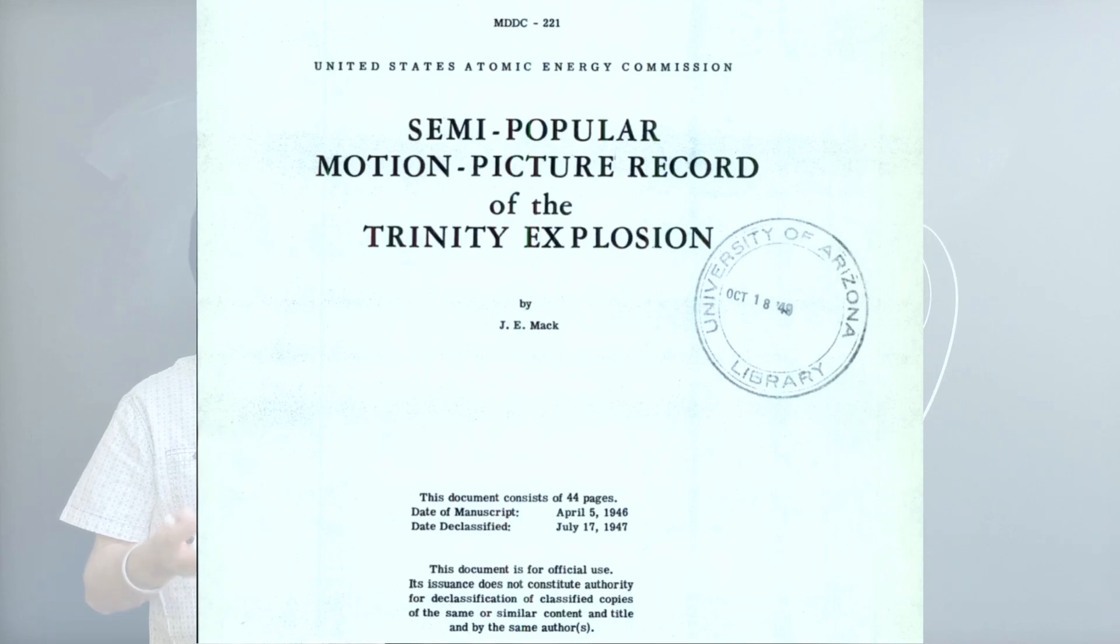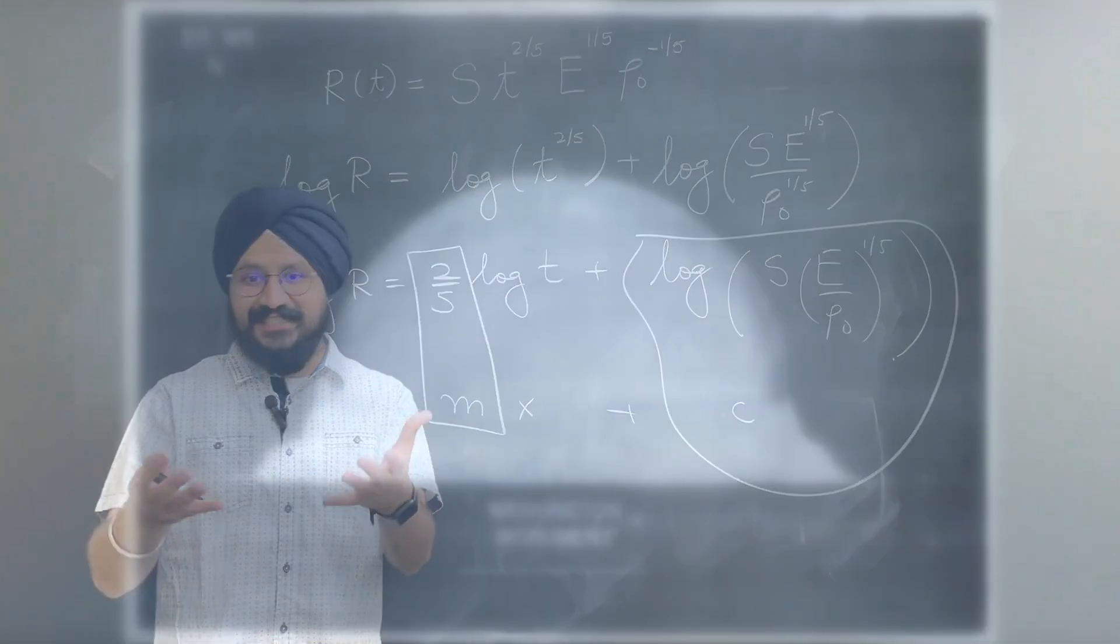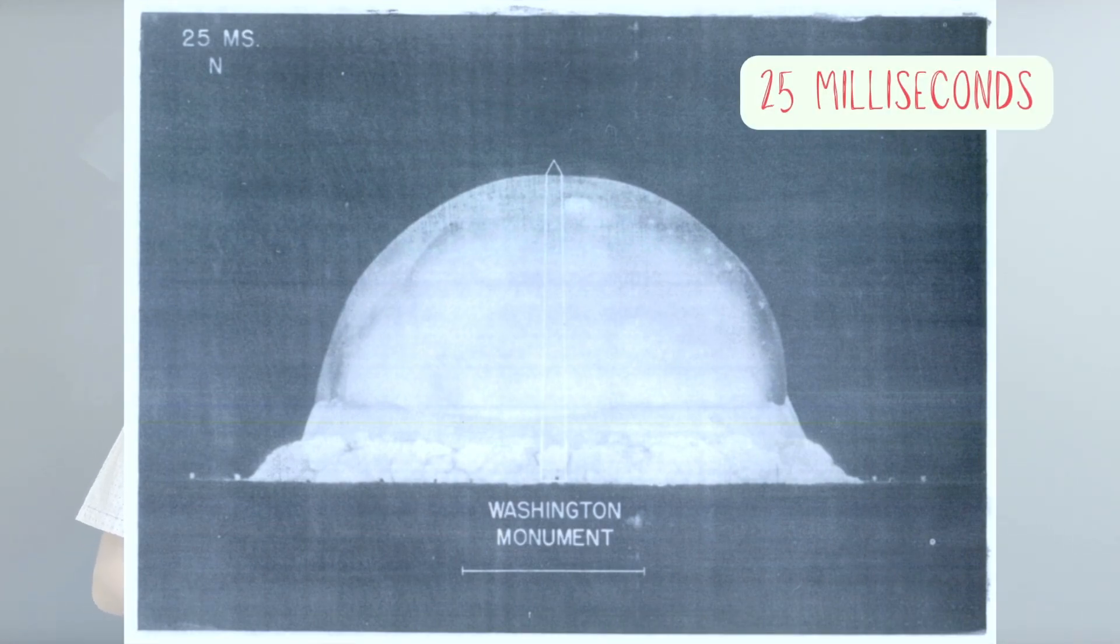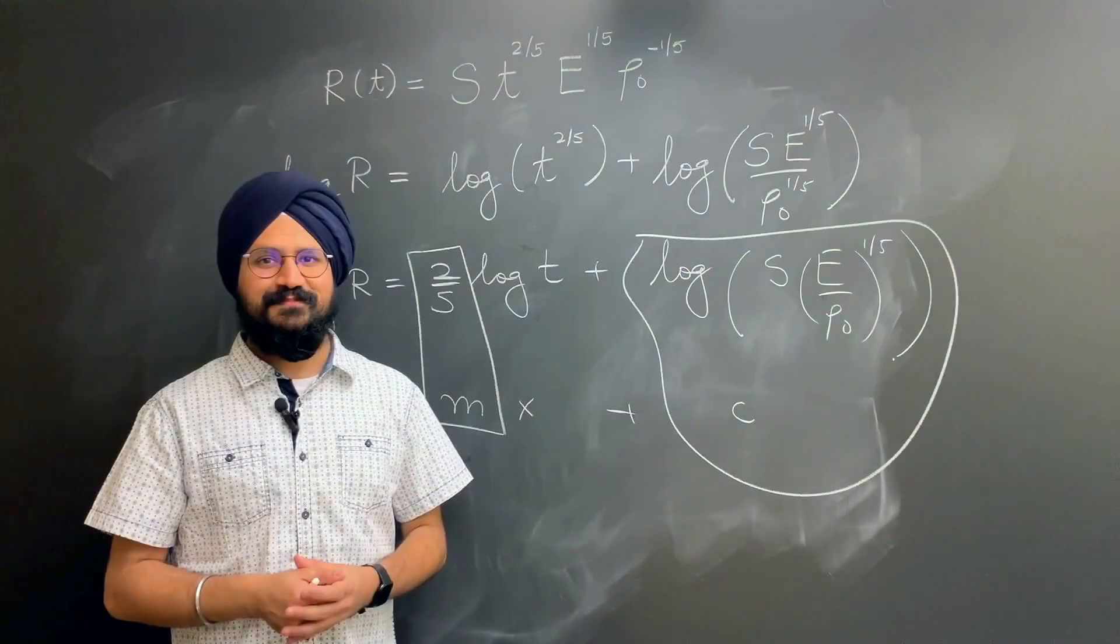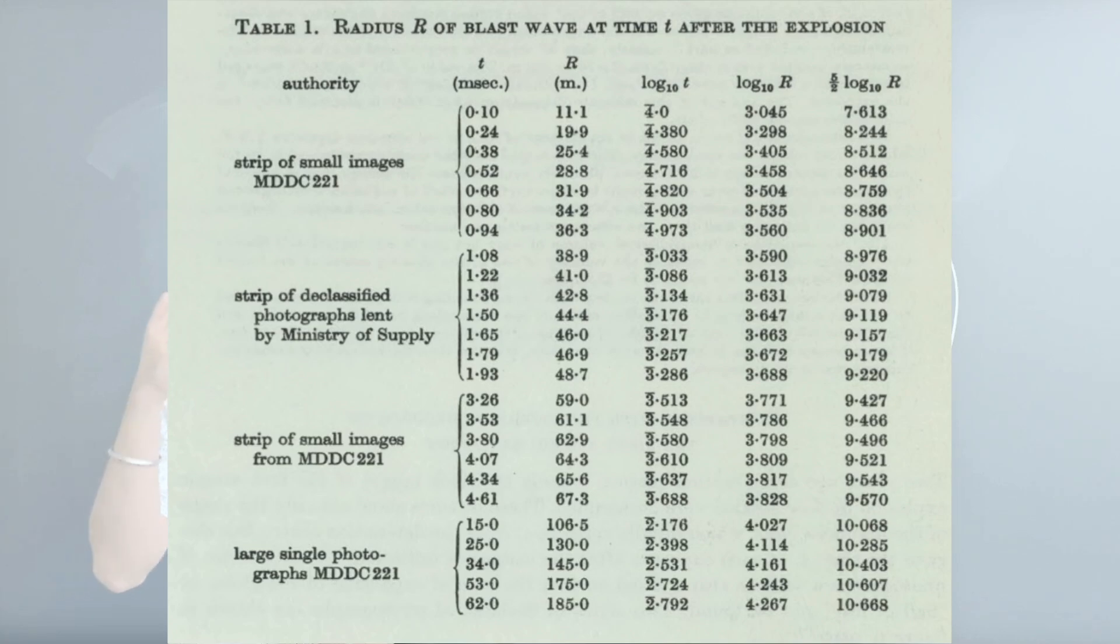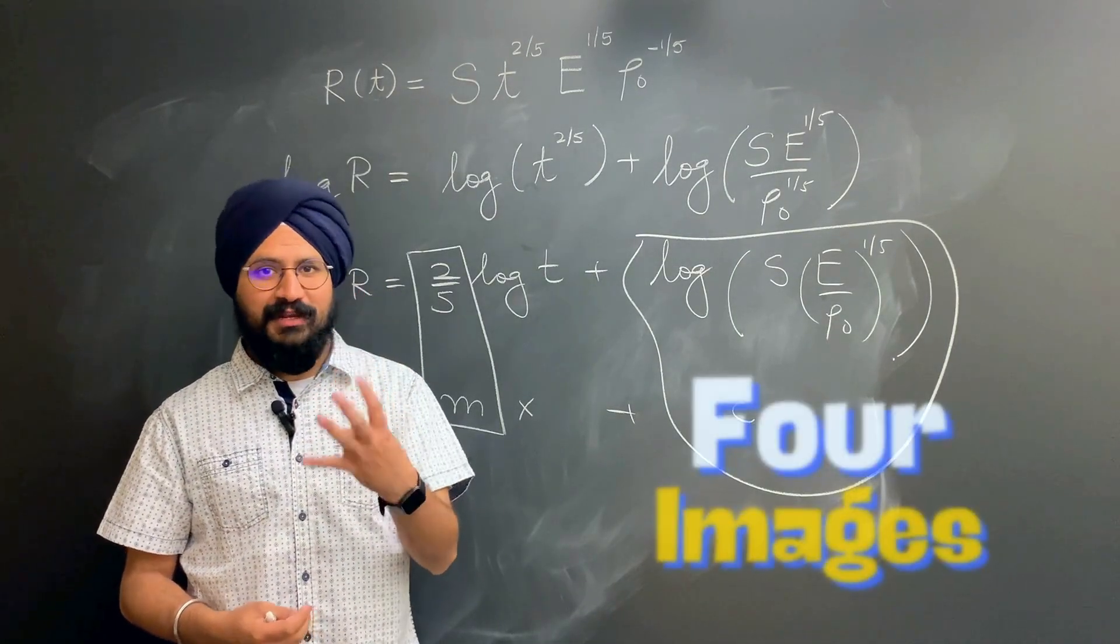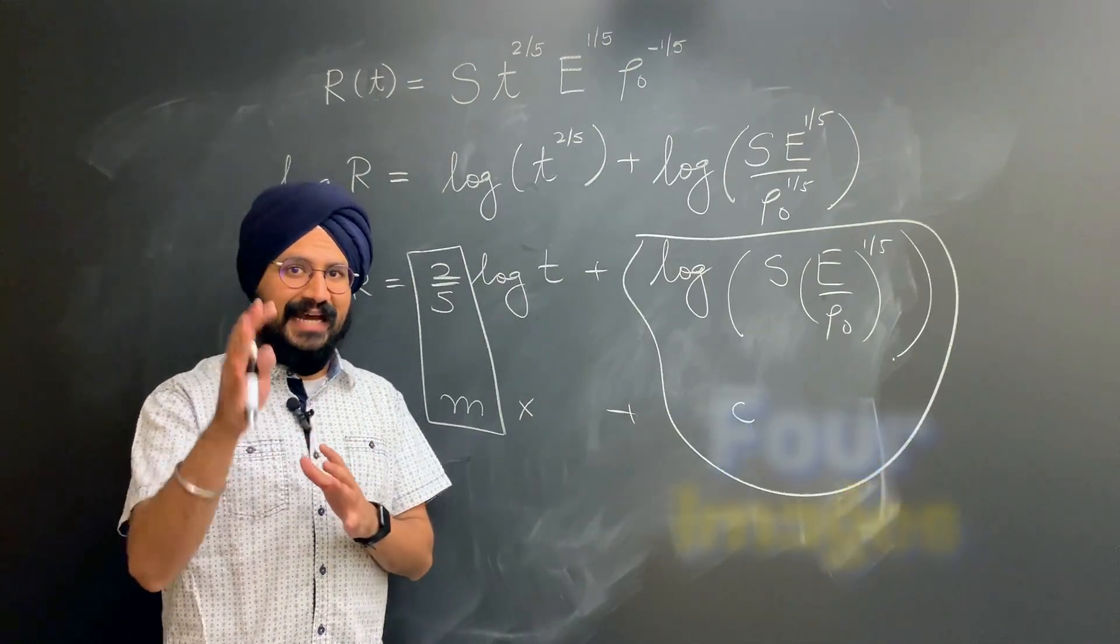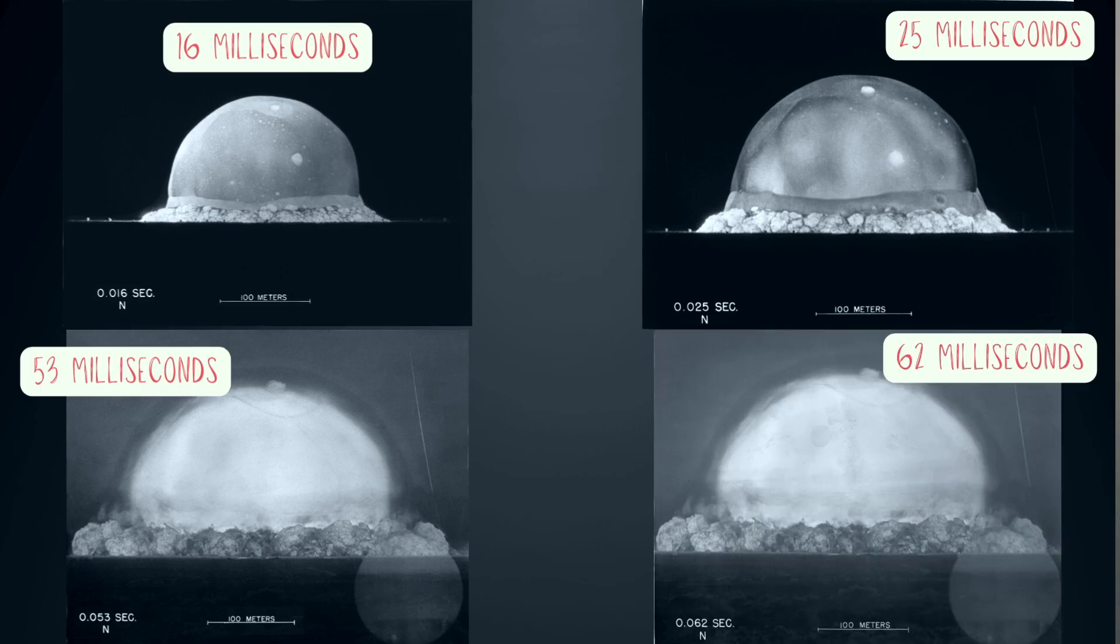In his report, J.E. Mack released images during the first few milliseconds of the blast. For instance, this image taken at 25 milliseconds compares the blast wave and the fireball with the Washington Monument. Puts things in perspective, doesn't it? Taylor used a total of 25 images from the Mack report and the Ministry of Supply for his analysis. But we are going to use just four images to capture the basic idea behind the calculation: four images taken at 16 milliseconds, 25 milliseconds, 53 milliseconds, and 62 milliseconds.